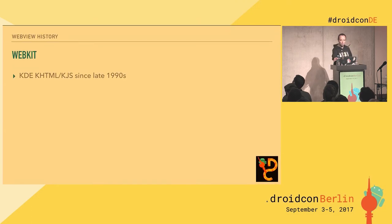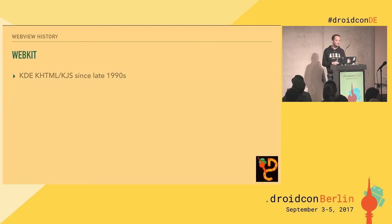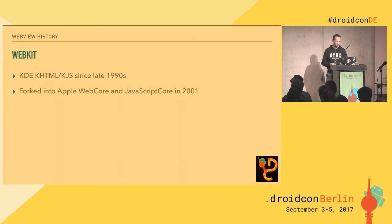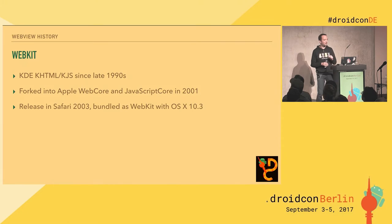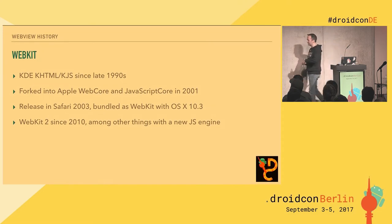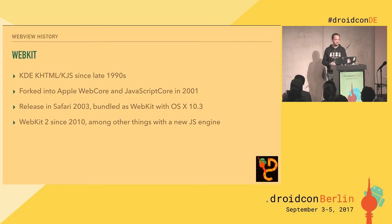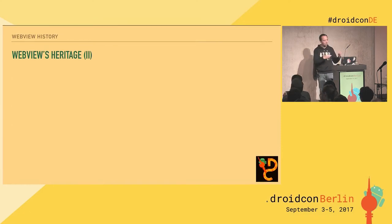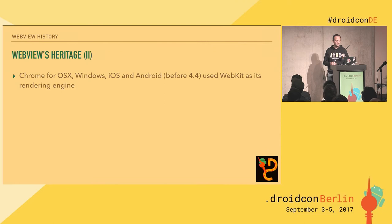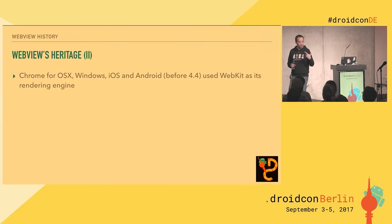WebKit comes from an old project from the KDE guys — a browser and JavaScript engine called KHTML and KJS, developed since the late 90s out of the Linux ecosystem. Apple forked that into WebCore and JavaScript Core, which became Safari on OSX. Apple later upgraded to WebKit 2 with their own custom JS engine, making it essentially an Apple thing. WebKit was still used for Chrome on Mac, Windows, iOS, and Android.